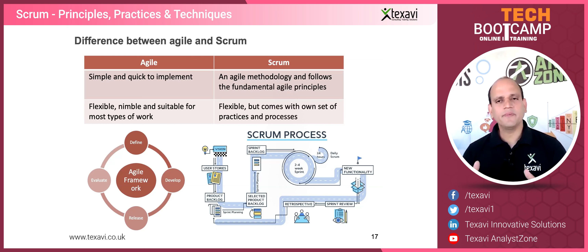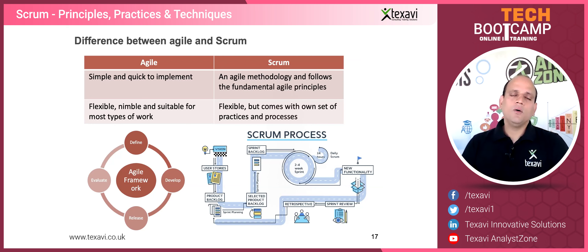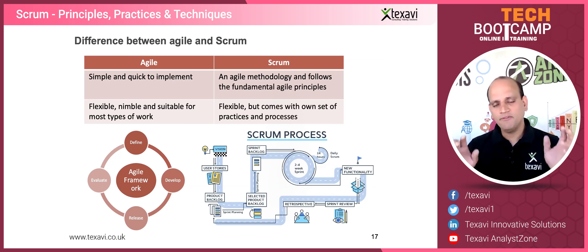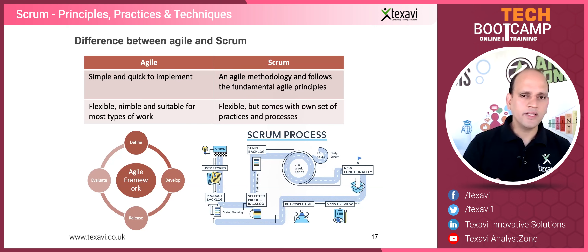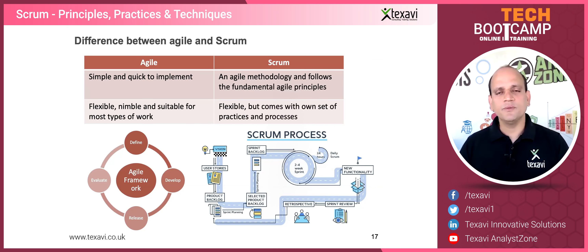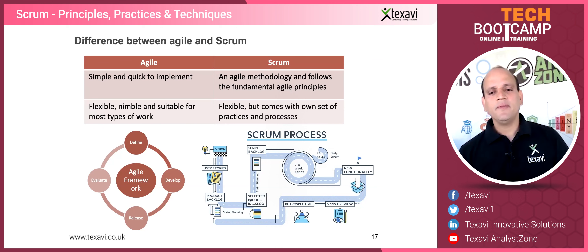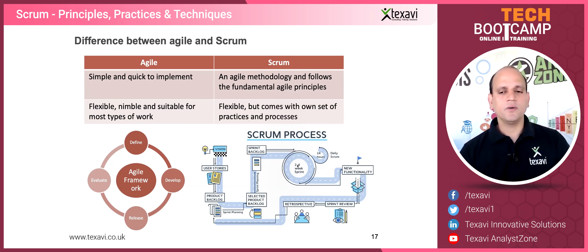Same with Scrum. Scrum is a lightweight process, an agile methodology that comes with its own language — and that's what we're learning today. That includes sprints, scrum masters, product owners, the backlog — different terms we get used to once we start working with it.